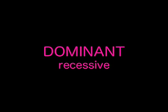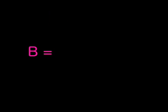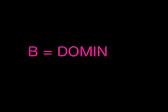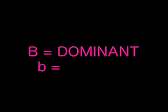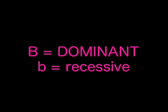There are also different types of genes. We call them dominant genes and recessive genes. The big B equals the dominant genes, while the little b equals the recessive genes.